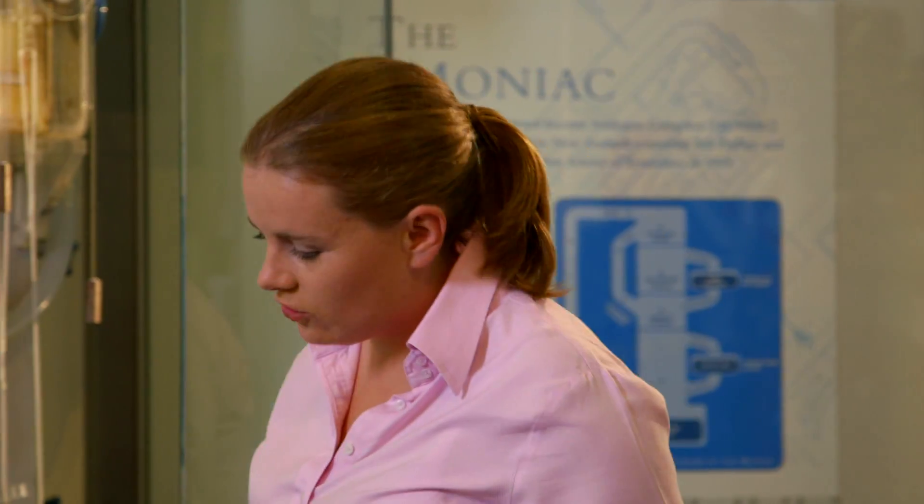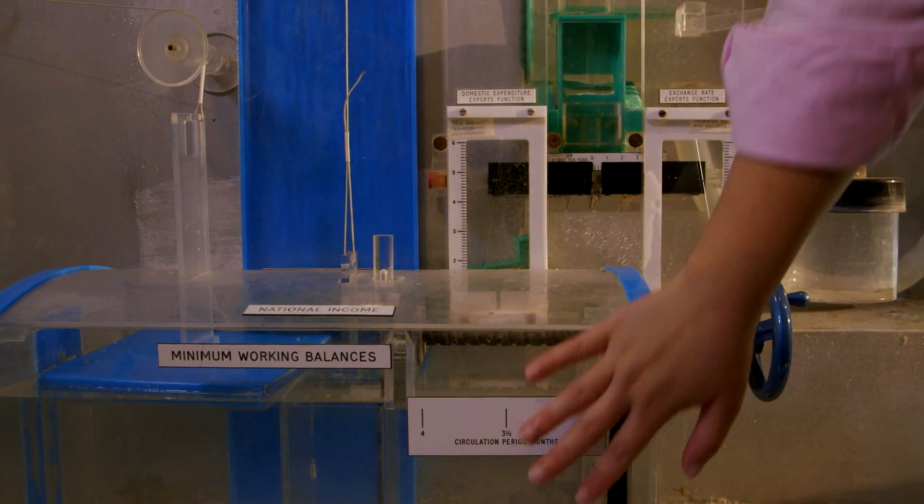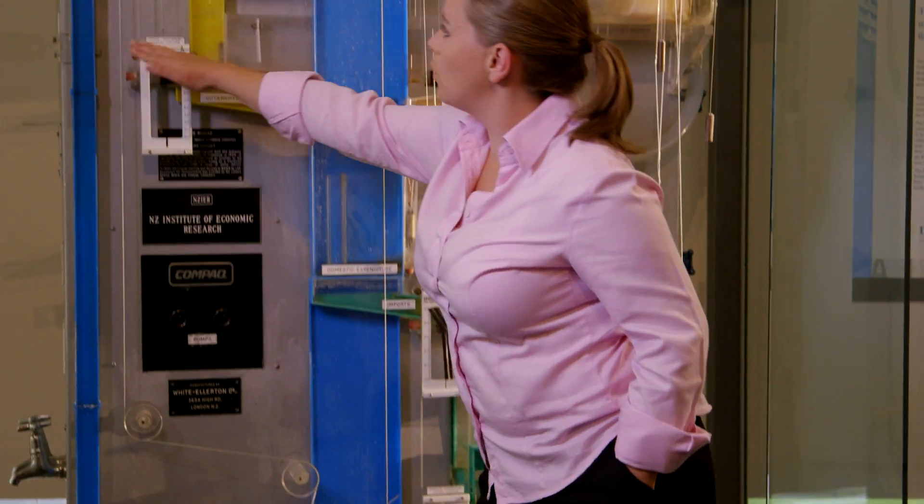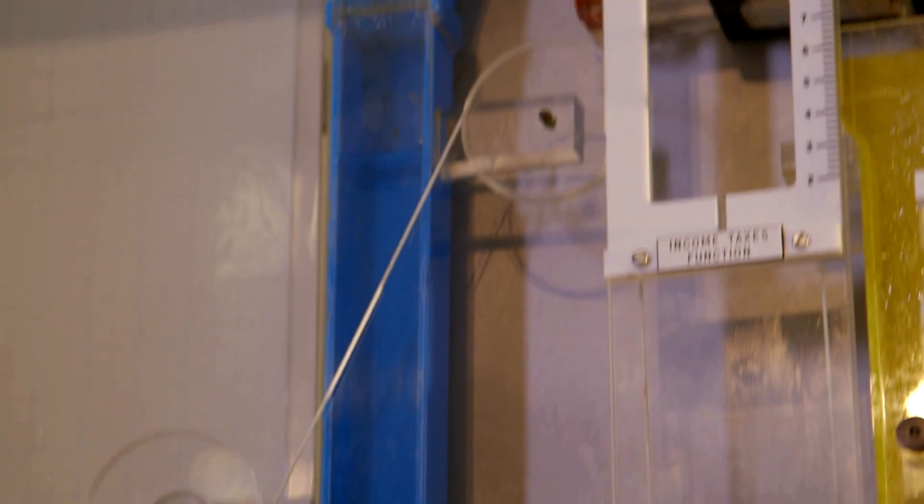So this machine here is going to show how water flows around the economy, or how money flows around the economy. We have this income tank down here, and this is water flowing up into the machine as income.